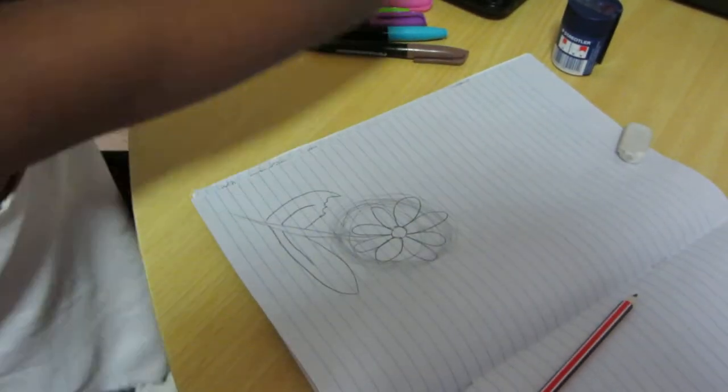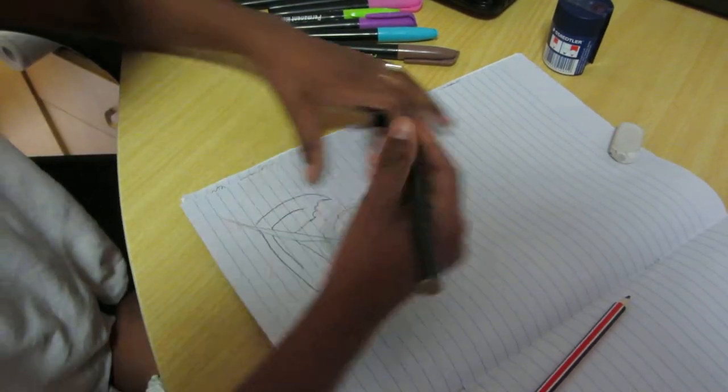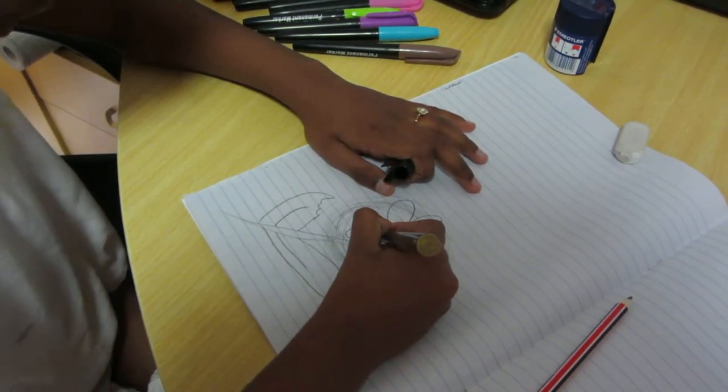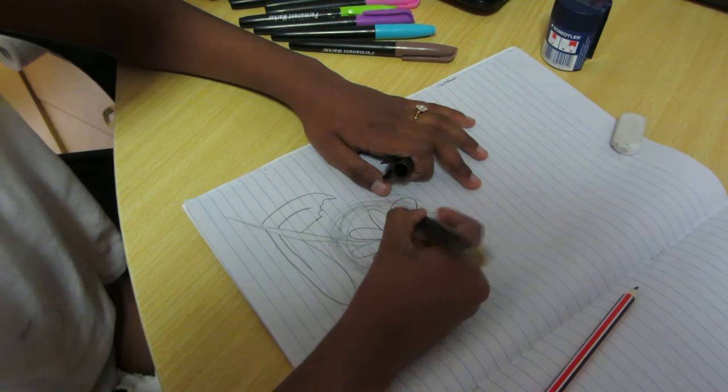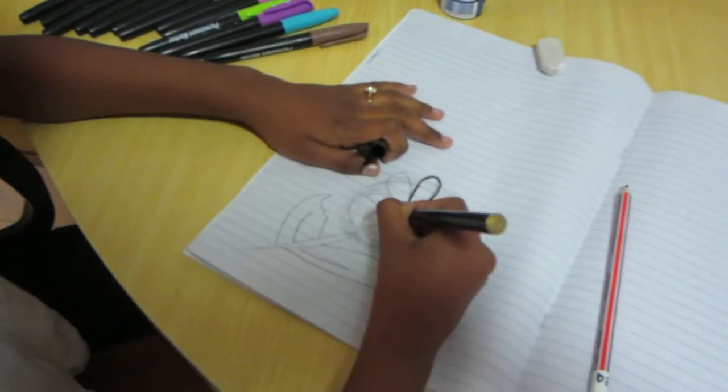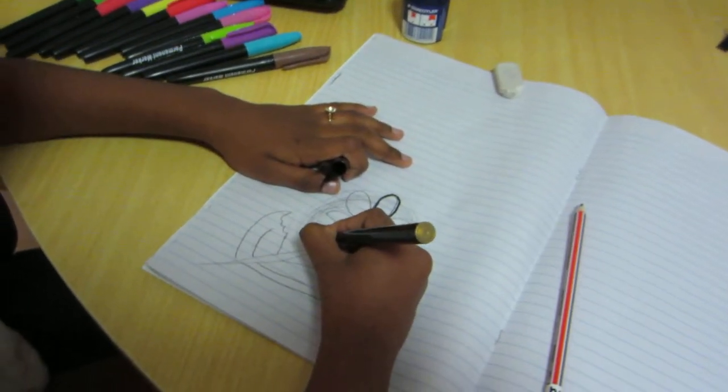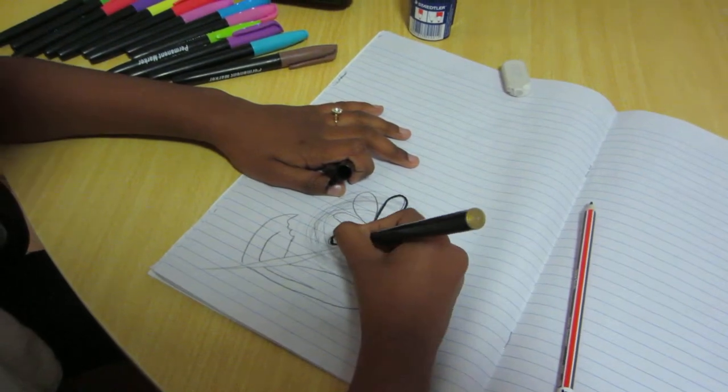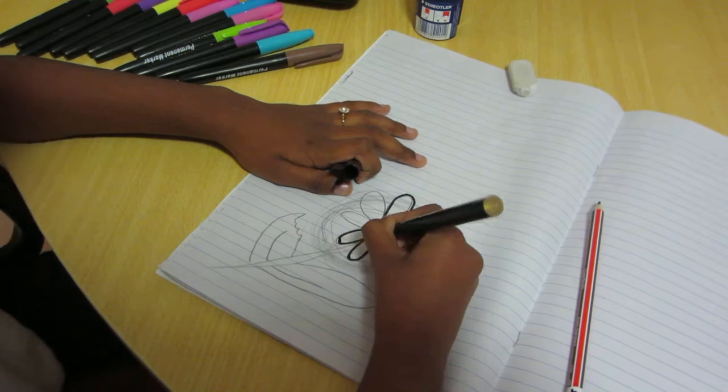Now get a black texture or permanent marker, whatever you like that's black, and trace the circle in the middle like this, the petals, just like that.